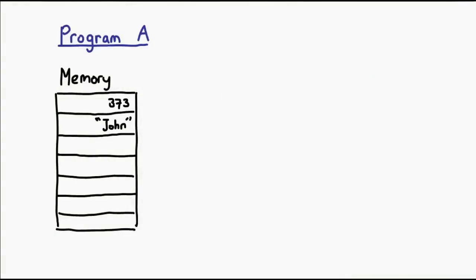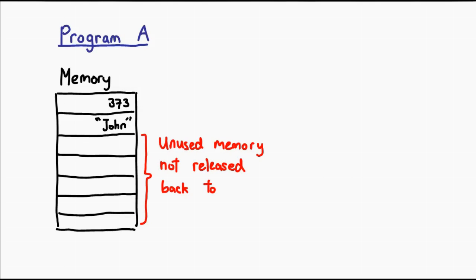When programs request for memory, when they're done using it, the proper practice is to return this memory. This means the memory becomes free again and can be used by other processes that actually need it. However, one common cause of memory leaks is when programs request for memory, use it, and then don't return it. This probably comes from a programming oversight, but it could actually be worse.